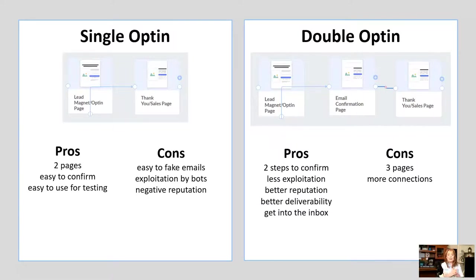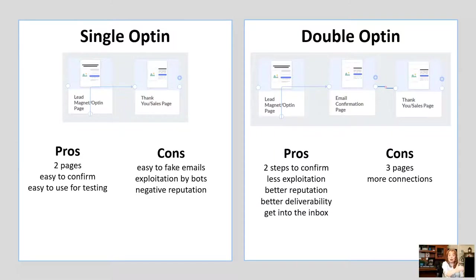We're able to do that because they don't have to confirm their email. A single opt-in means they need to do one thing to get on your subscriber list, and that one thing is to fill out the opt-in form on that lead magnet opt-in page. Once they hit submit, they are submitted to your subscriber list and already confirmed, so you can send them straight to your thank you or offer page.